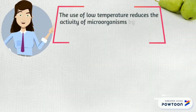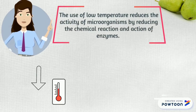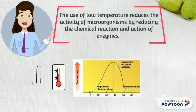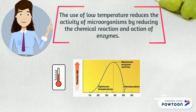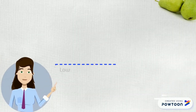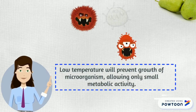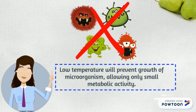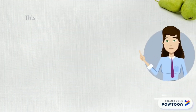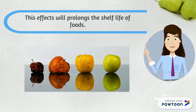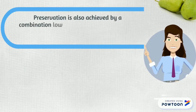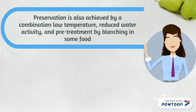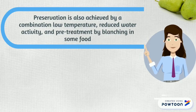The use of low temperature reduces the activity of microorganisms by reducing the chemical reaction and action of enzymes. Low temperature will prevent growth of microorganisms, allowing only a small metabolic activity. These effects will prolong the shelf life of food. Preservation is also achieved by the combination of low temperature, reduced water activity, and in some foods they use pre-treatment by blanching.